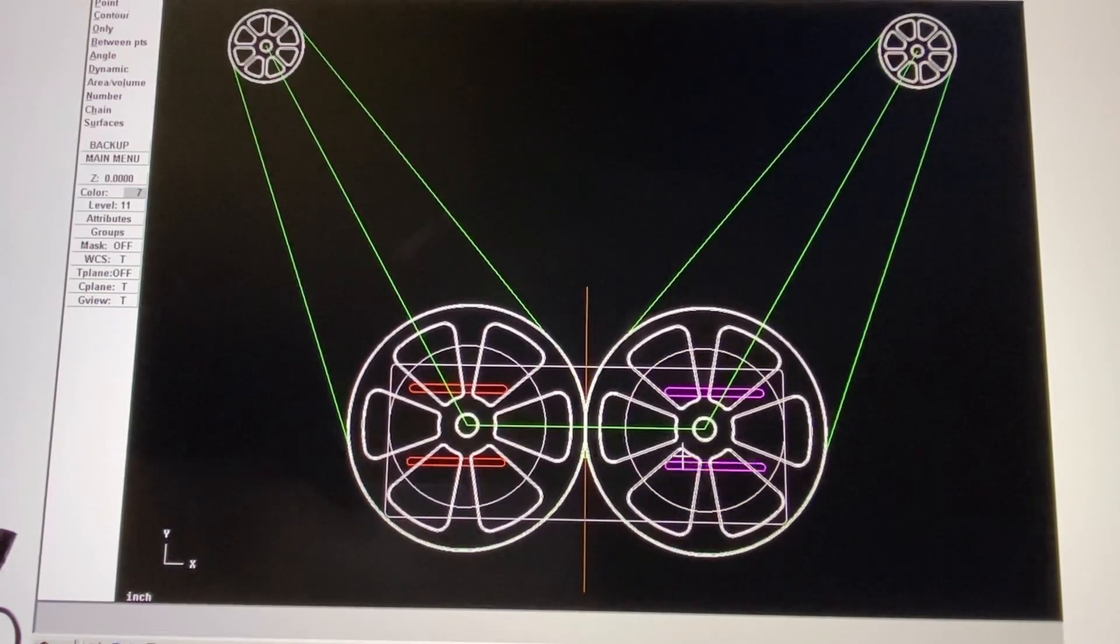Right now I want to focus on making these wheels. Because they're so big, I want to cast them, so I'm going to have to make a match plate or pattern so I can cast them out of aluminum.